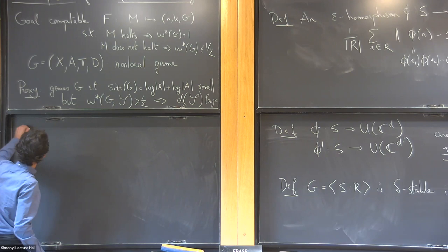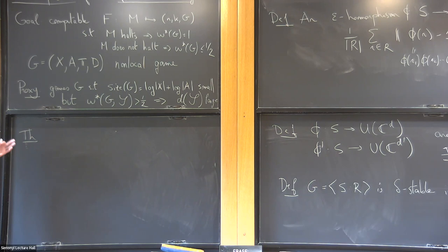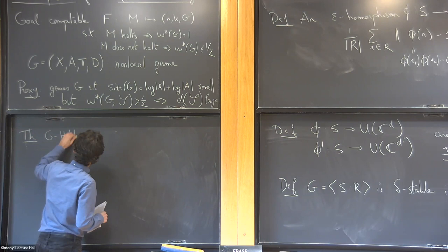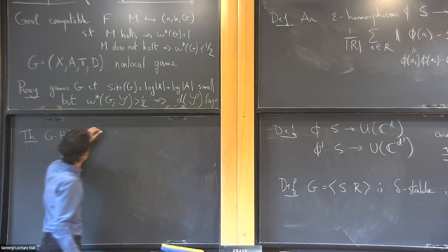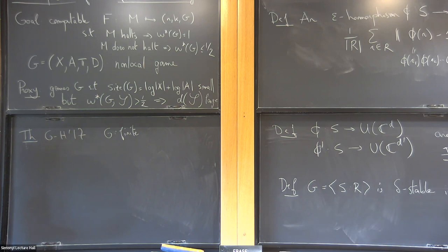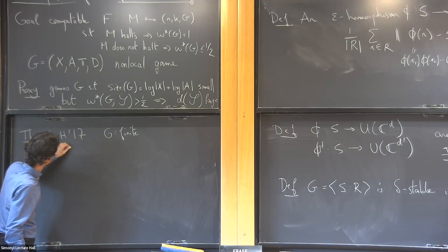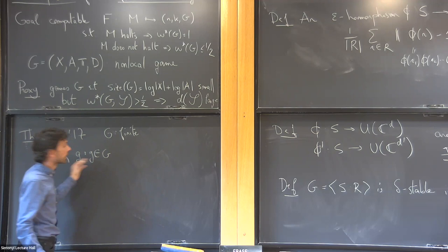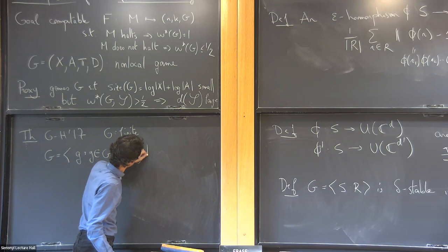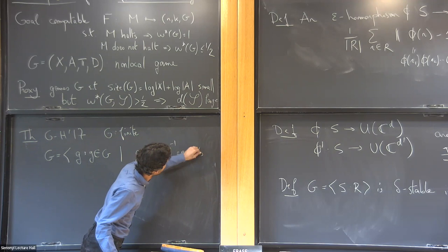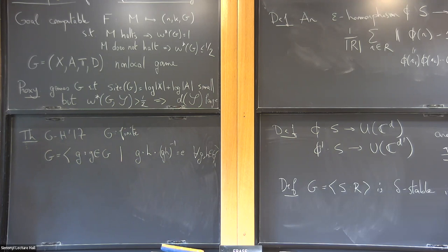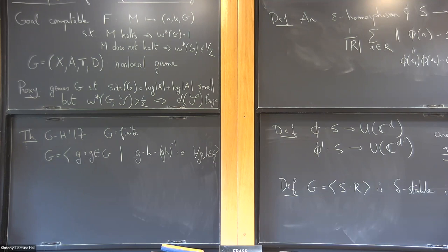Here's a theorem that's one of the important results in the study of this notion of stability, due to Gowers and Hatami. It applies to finite groups. For any finite group G, I can always give a presentation using all elements as generators and the multiplication table as relations — so G times H times (GH)^(-1) equals E for every G and H. The result is that with this presentation, delta(epsilon) equals a universal constant times epsilon. So we have a universal stability result for all finite groups with very good modulus delta.